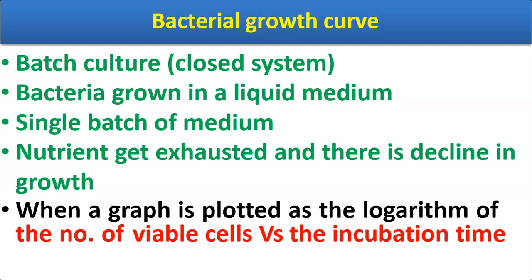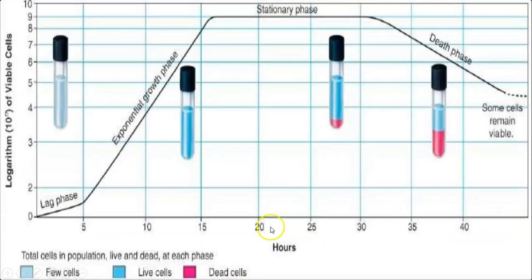The bacteria are inoculated in a liquid medium called broth, such as nutrient broth or McConkie's broth. In a single batch medium, nutrients get exhausted and there is a decline in bacterial growth. A graph is plotted as the logarithm of the number of viable cells versus incubation time — the y-axis shows number of viable cells, and the x-axis shows time in hours, for example 5, 10, and 15 hours.